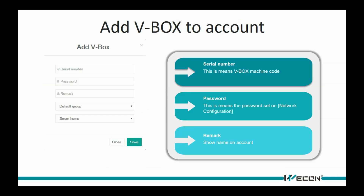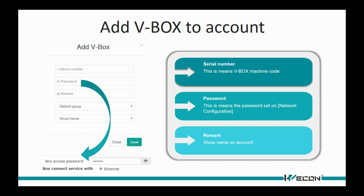This is the interface for adding a device. Paste the machine code into the serial number field. Fill in the password we set in the network configuration, and set the name of the device in the account.